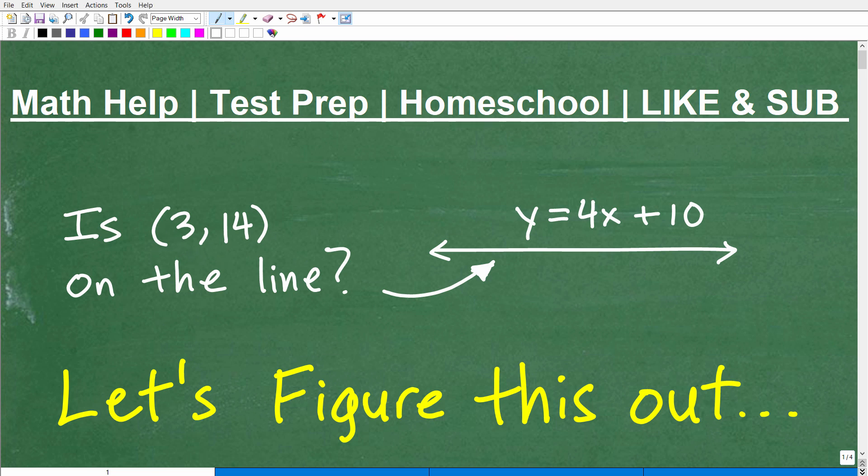Okay, is the point (3, 14) on this line right here? So we have this equation of a line. This is y equals 4x plus 10. And we call this technically in algebra a linear equation. It's the equation of a line.